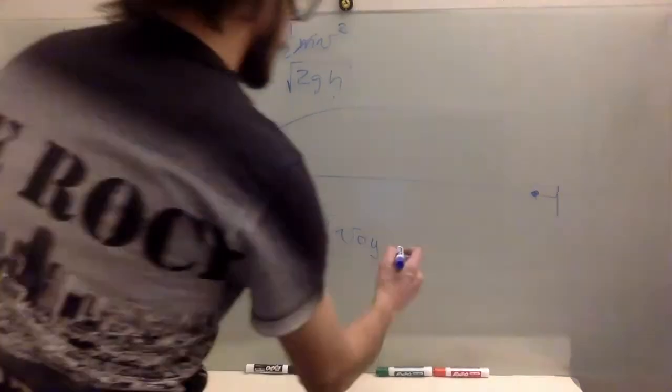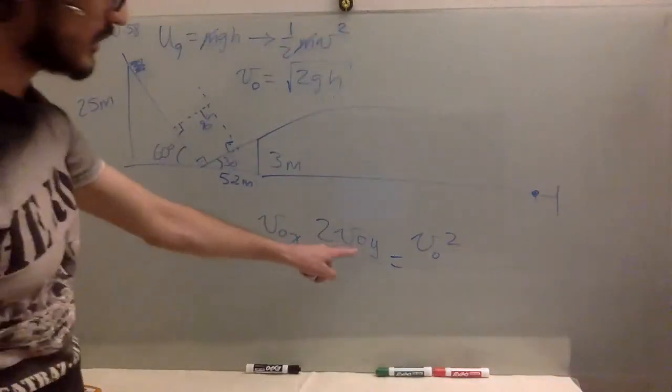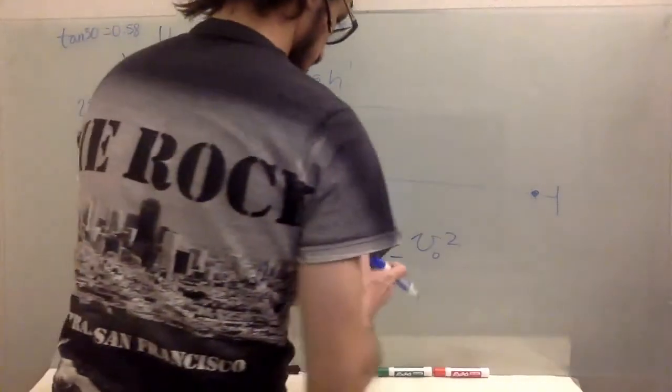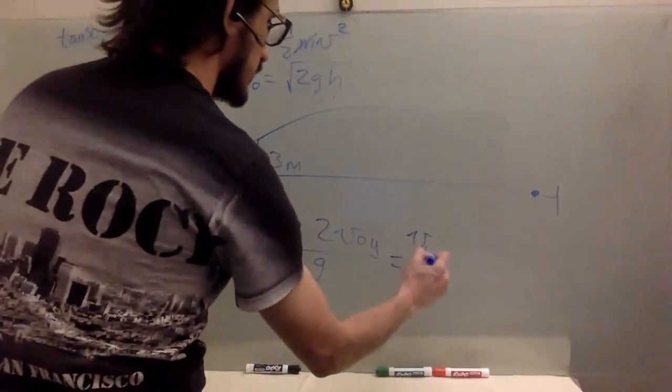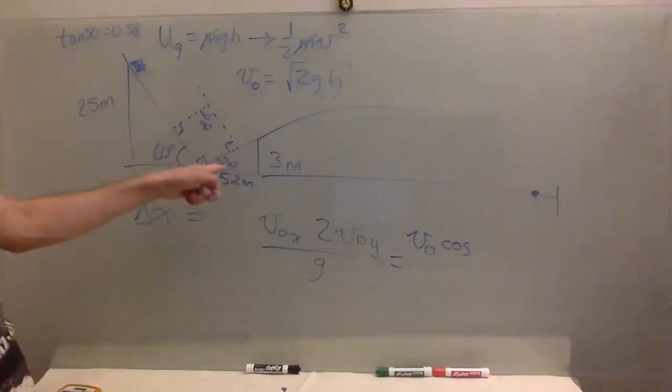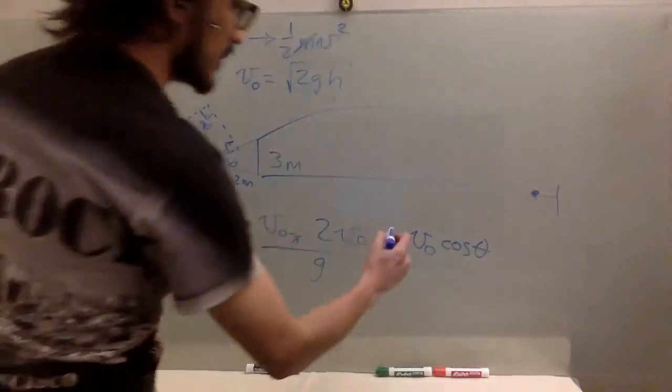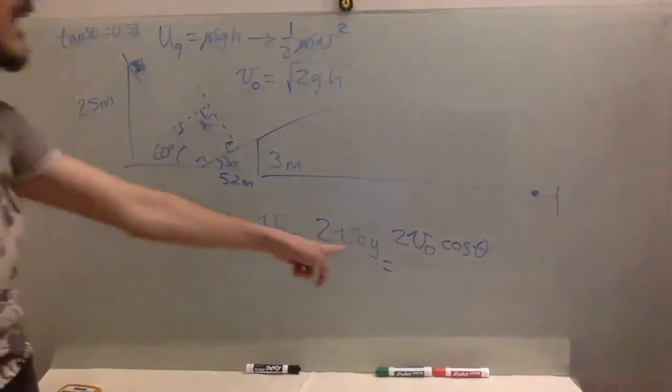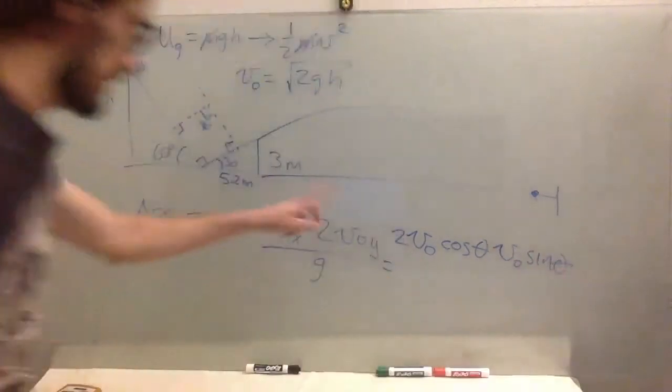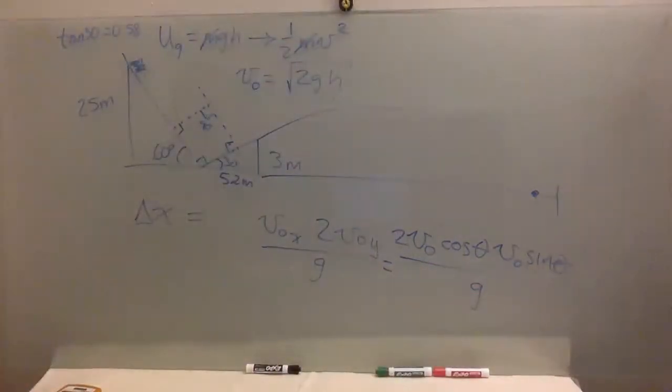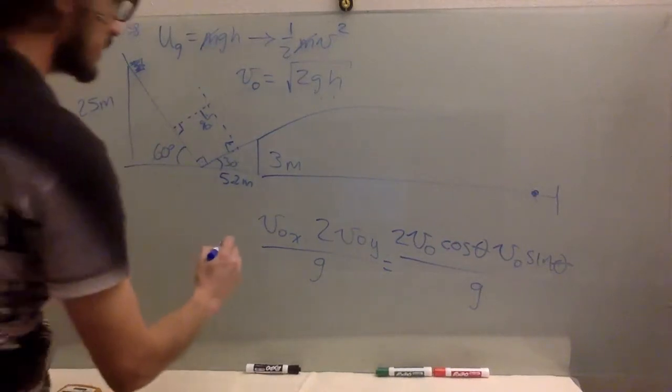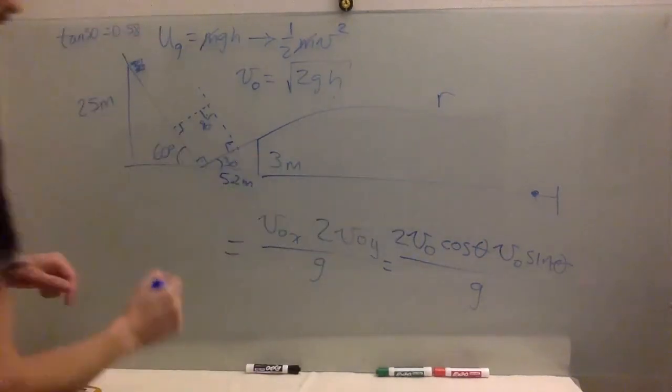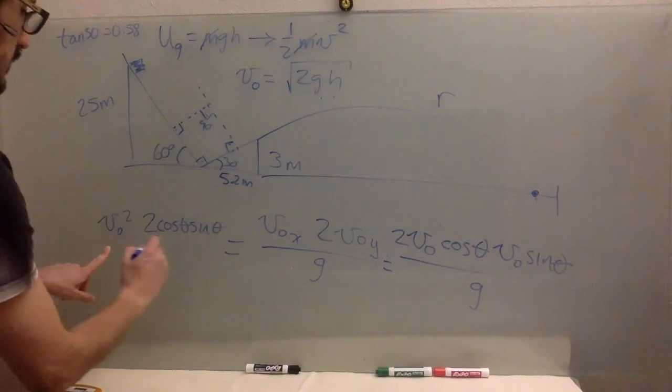So this is equal to v naught squared. This one and this one. Actually to make it a little bit more clear. This part is v naught cosine. We have been talking about the same angle the whole time. So theta. The two, I'm going to put it over here. This one is v naught sine theta over g. So this delta x, which is sometimes called the range, is two. Actually, I'm going to put the v naught squared. Two cosine theta sine theta over g.